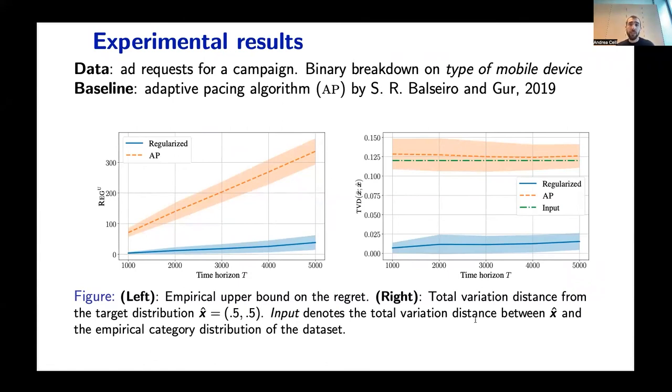On the left you can see that, as expected, the adaptive pacing is not able to take distributional preferences into account, and so the regret that it accumulates grows linearly over time. On the right, you can see the total variation distance between the realized distribution of impressions and the target distribution, which is one half, one half in this case. You can see that our algorithm performs good over time because it's always close to zero, whereas the adaptive pacing algorithm has a realized distribution of impressions which is close to the input distribution of the underlying data.